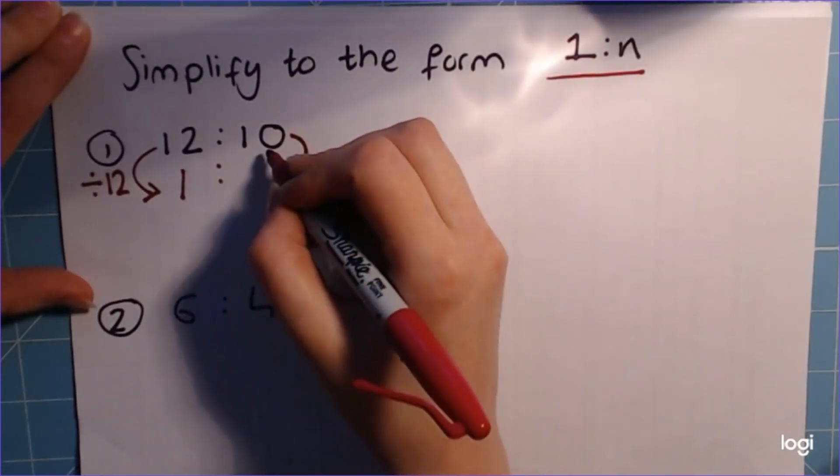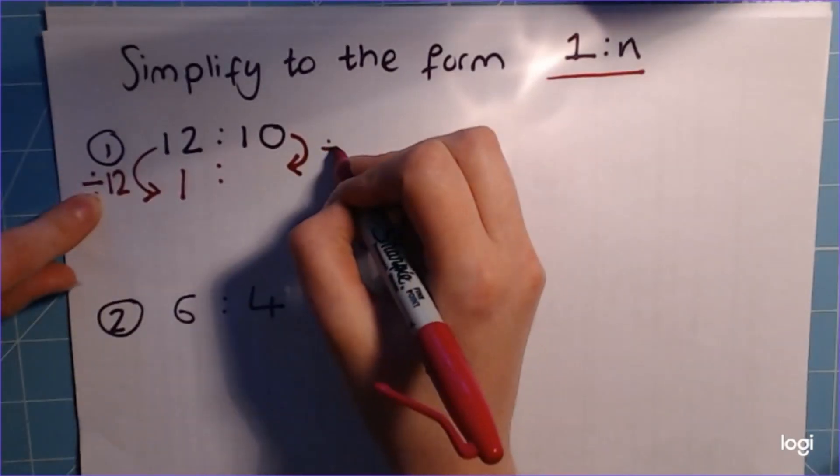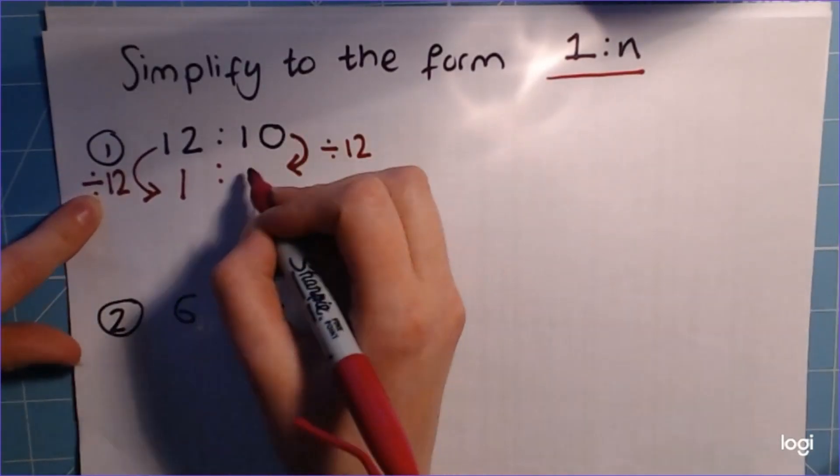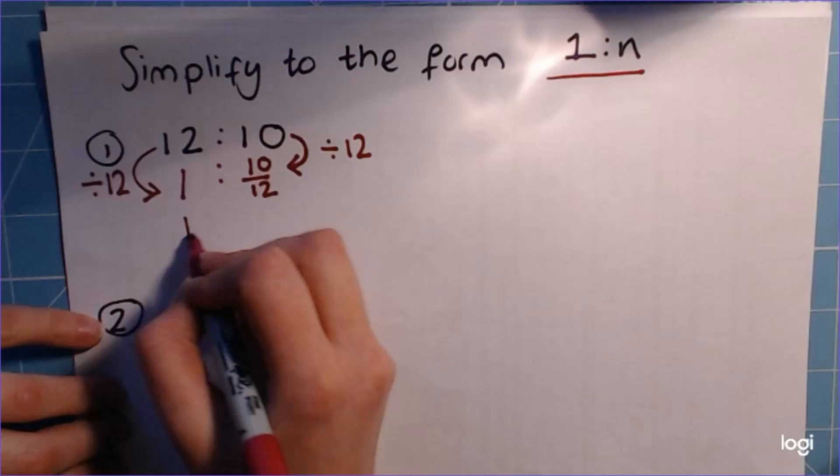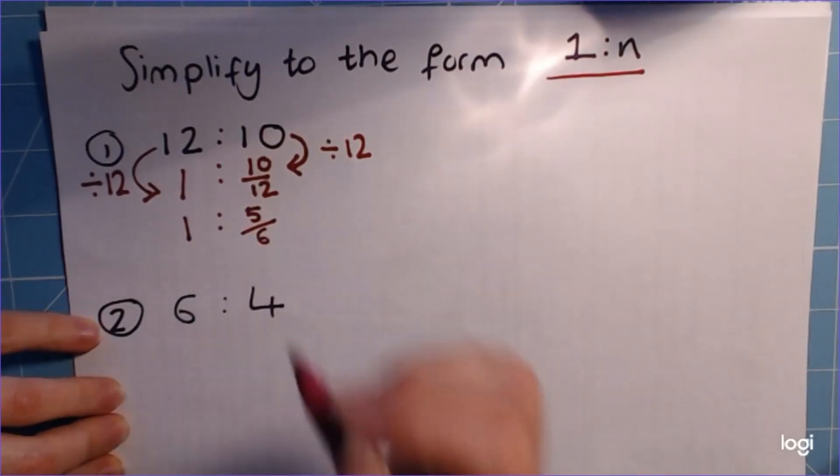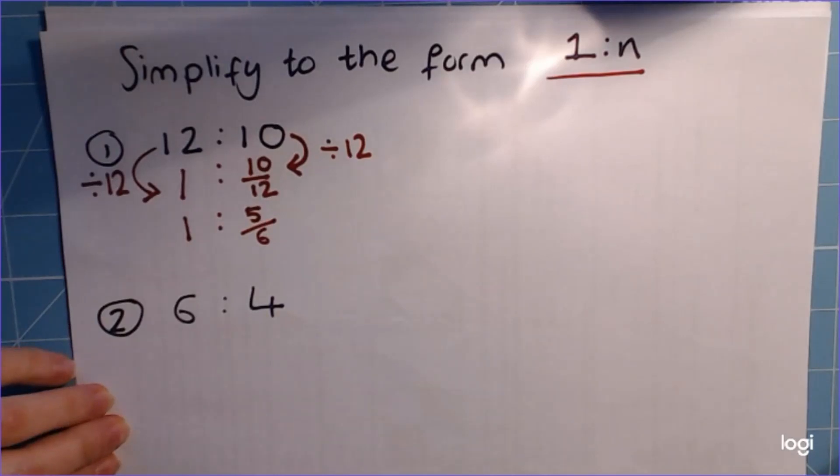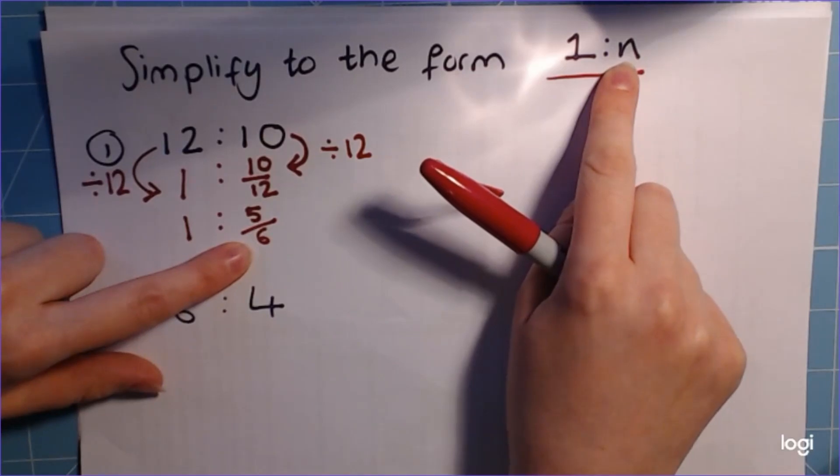We don't go ahead and divide that by 10, because it wouldn't keep it balanced out. We have to divide it by 12. So we're going to get 10 over 12, get a fraction. And we can simplify that. It would be nice if we simplified it, so we get 1 to 5/6. Now it is in the form 1 to n where n is 5/6.